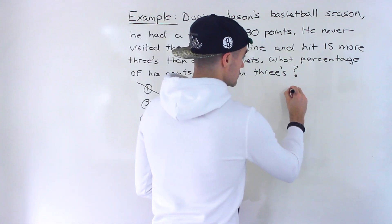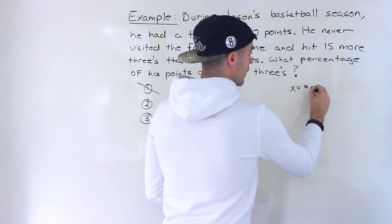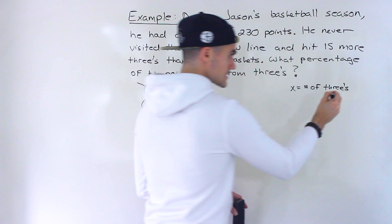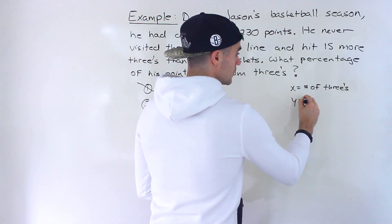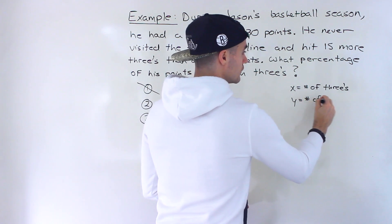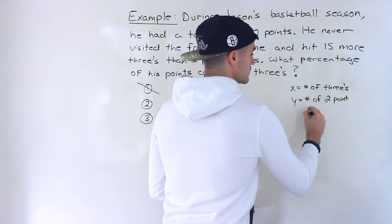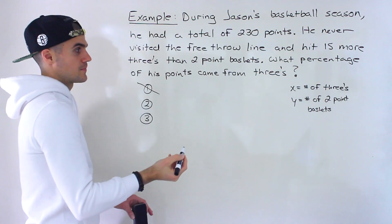So what I'm going to do is introduce some variables. I'm going to let x equal the number of threes or three-point baskets that Jason made. And then y is going to equal the number of two-point baskets or two-point shots that he made.